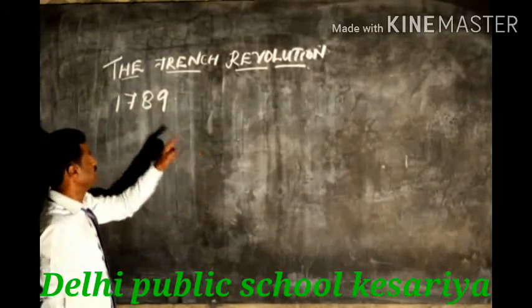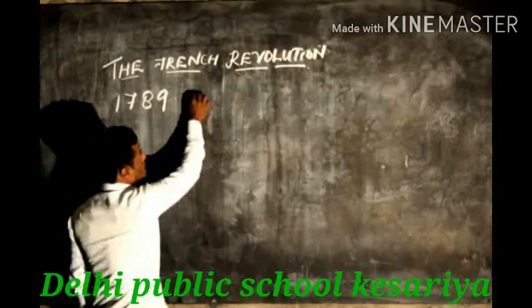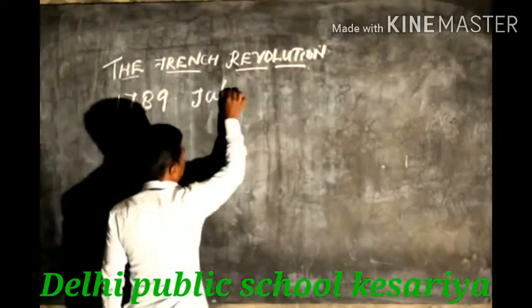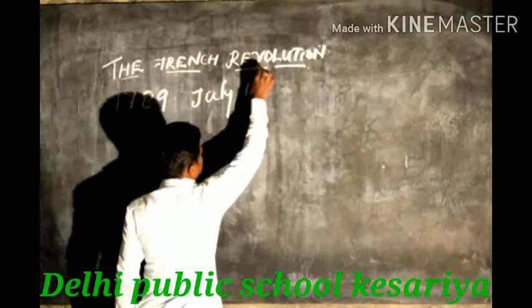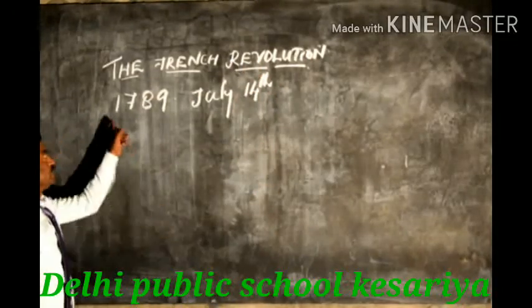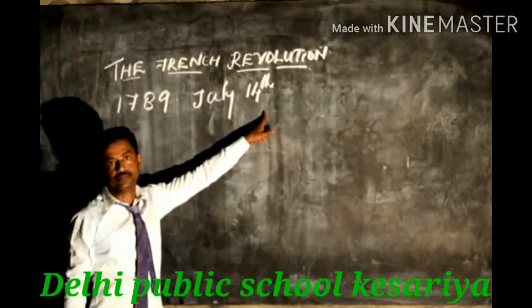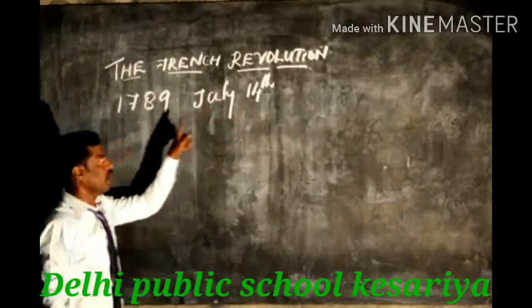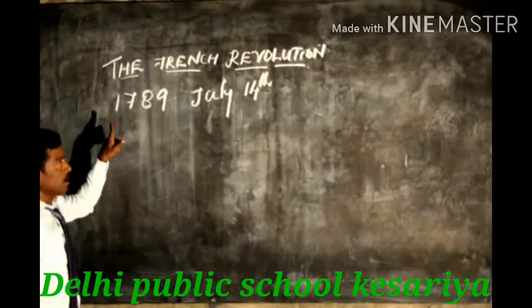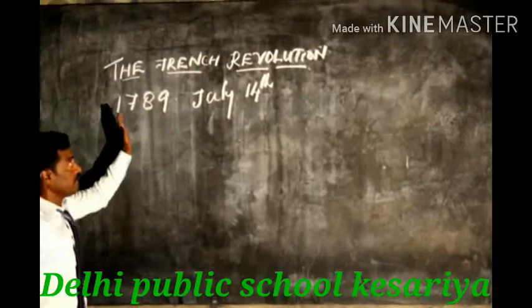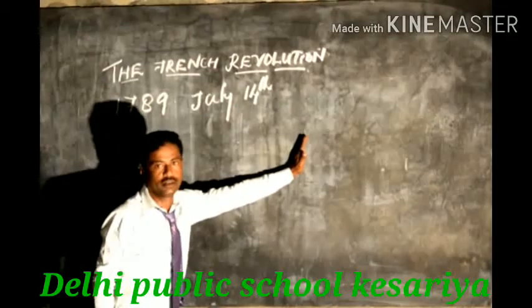The French Revolution started in 1789, July 14th. The first seed of the revolution started in France on July 14, 1789.